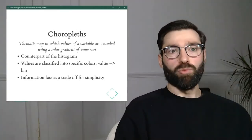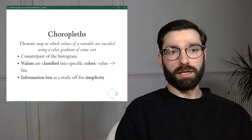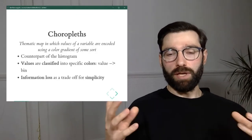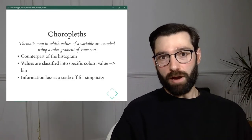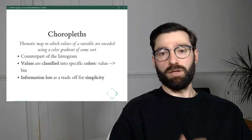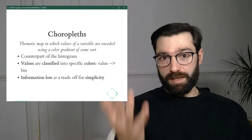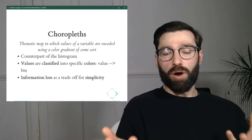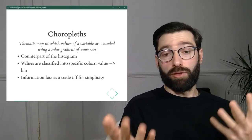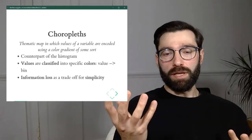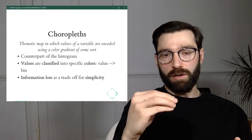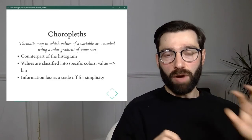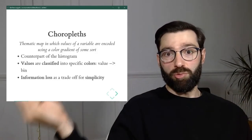Choropleths are thematic maps in which the values of a variable are encoded using a color gradient of some sort. What they are is maps that bridge cartographic, traditional display of geographic information with statistical, not necessarily explicitly spatial information. The way we do this is by encoding the non-spatial information in color and then assigning that color to locations based on the location of the entities that each value represents.